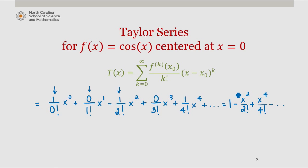We notice that the terms are alternating and the powers are all even. So we can actually write this in general form as the sum from k equals 0 to infinity of negative 1 to the 2k divided by 2k factorial x to the 2k. Verify this on your own paper.